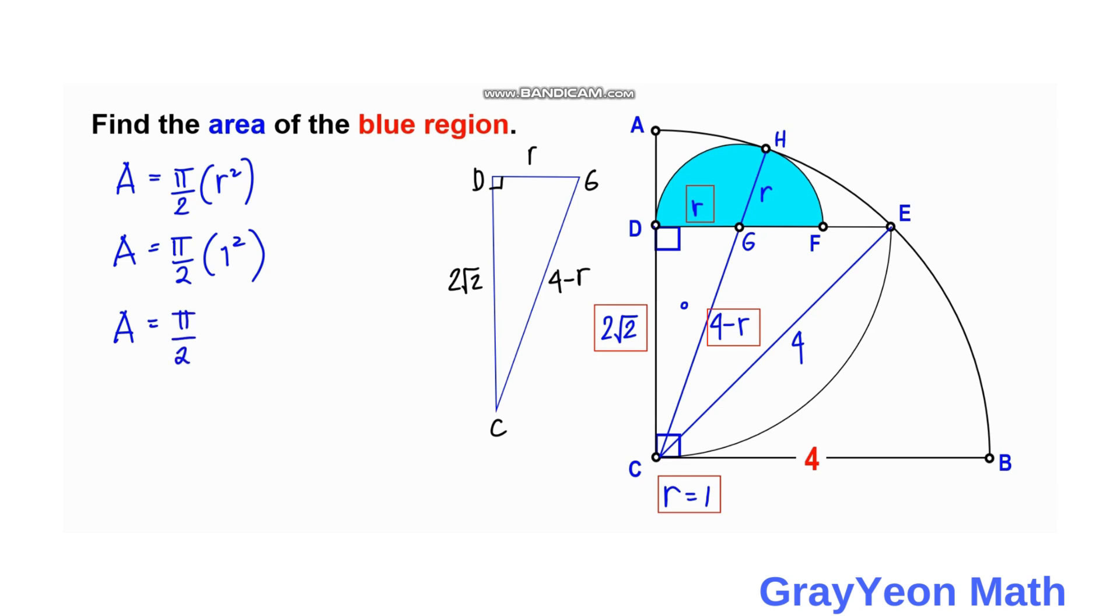So area is equal to pi over 2 square units, and that is our answer. Thank you for watching until the end of the video. Please like the video if you like our solution and don't forget to subscribe to the channel and hit the bell icon so you will be updated for more math videos like this.